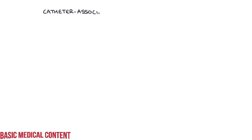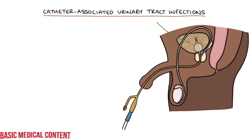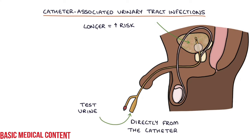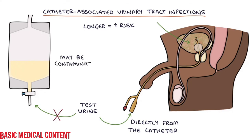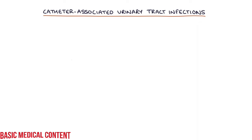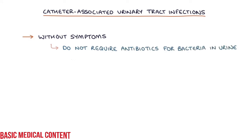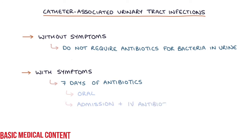Finally, let's talk about catheter-associated urinary tract infections. Infections are a key complication of urinary catheters — the longer the catheter is in place, the more likely bacteria are to grow in the urine. If testing the urine of a catheterised patient for infection, the sample should be taken directly from the catheter or the sample port using an aseptic technique, and not from the catheter bag, as this may be contaminated. There are NICE guidelines on catheter-associated urinary tract infections from 2018. Patients without symptoms do not generally require antibiotics. Patients with symptoms require 7 days of antibiotics — either oral or IV depending on severity. The catheter should be changed as soon as possible after the infection is diagnosed, but this should not delay giving antibiotics.